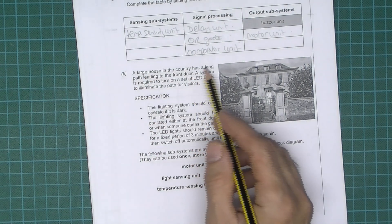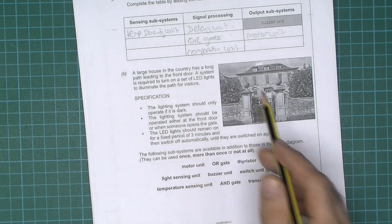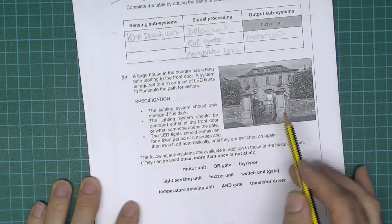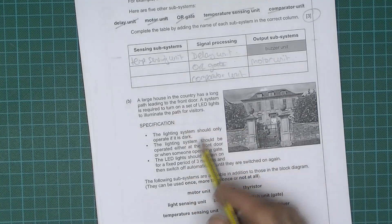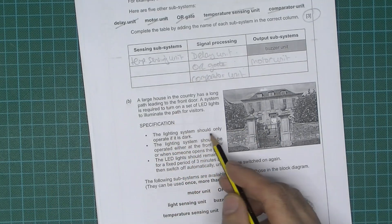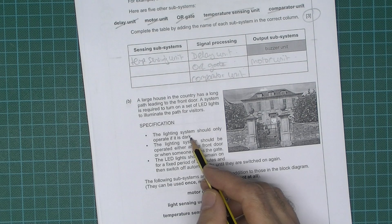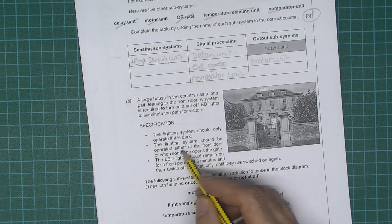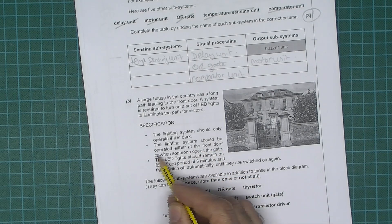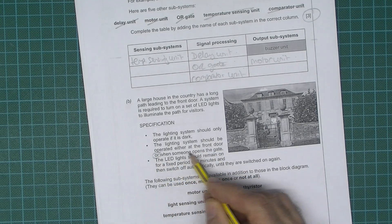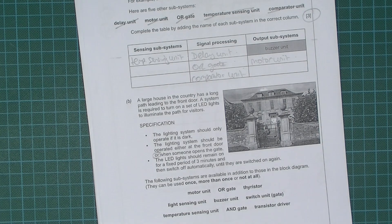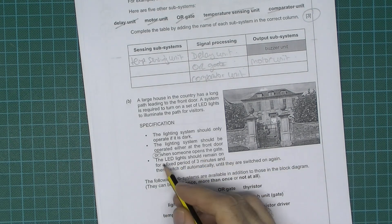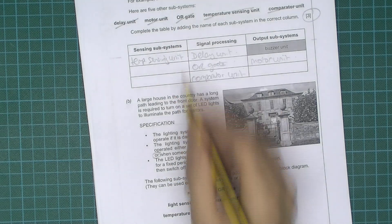So a large house in the country has a long path leading to the front door. A system is required to turn on a set of LED lights. Okay, so we need some sort of sensors, aren't we. The lighting system should only operate if it's dark, so I'm imagining that there's going to be a dark sensor or a light sensor. The lighting system should be operated either at the front door or when someone opens a gate. So immediately when you read something like that you think, oh yeah, there's probably going to be an OR in there somewhere, a logic OR gate.